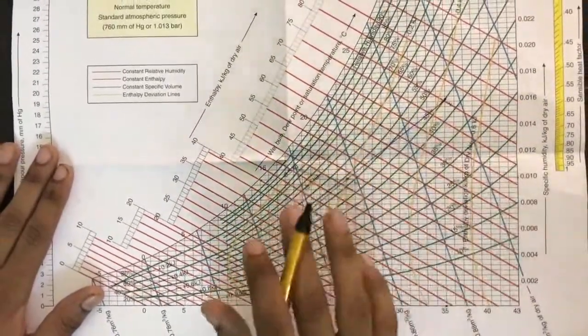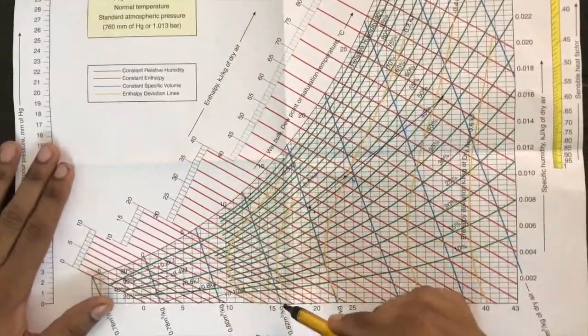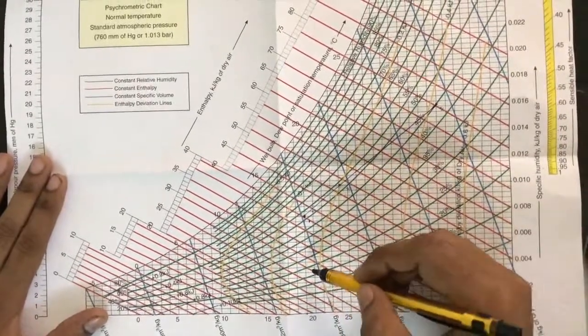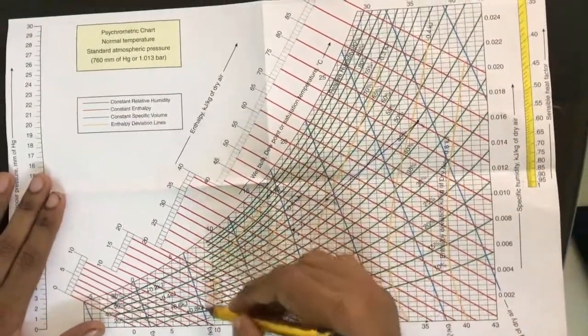These red lines are the enthalpy lines and these are enthalpy deviation lines. And these lines are the specific volume lines.